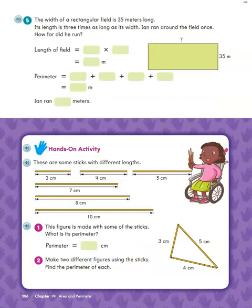We're going to try one more problem before we do our practice page. This one says the width of a rectangular field is 35 meters long. Its length is three times as long as its width. Ian ran around the field once. How far did he run? So we need to figure out how far did he go? So if we know that the length is three times the width, then the first thing we would want to do is figure out what that length is, right? Notice that's where our question mark is too, to help us remember that that's what we're trying to figure out first before we can figure out the whole distance around it.